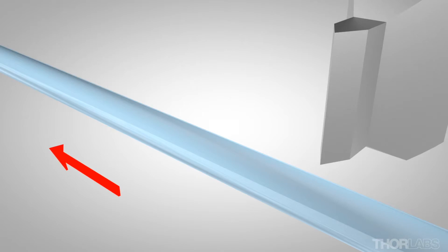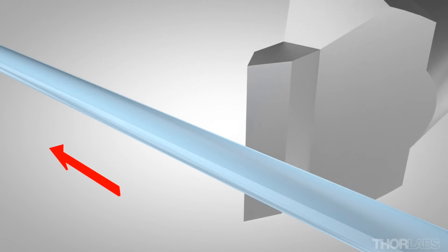The fiber is first placed under a known tension. Then a diamond cleave blade moves gradually forwards in a pecking motion until the blade just strikes the fiber, causing it to cleave.